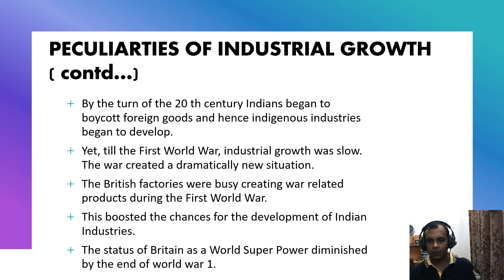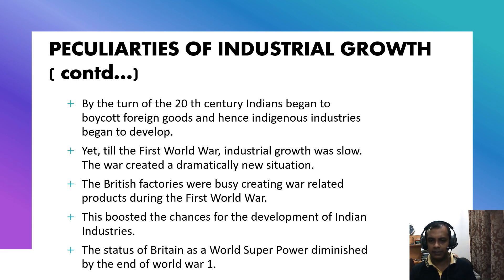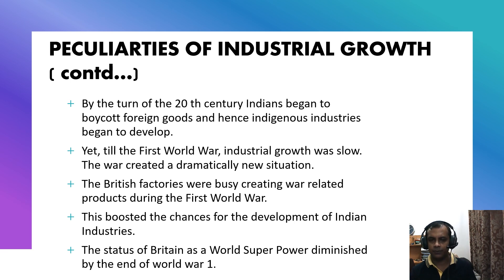But under the First World War, which started in 1914, industrial growth was comparatively slow. The war created a dramatically new situation. Britain no longer continued to be the superpower in the world, and its repercussions could be found in the industrial sector also. The British factories were busy creating war-related products during the First World War. This boosted the chances for the development of Indian industries. The status of Britain as a world superpower diminished by the end of the First World War.